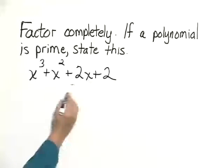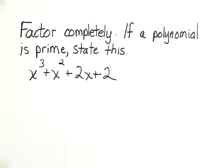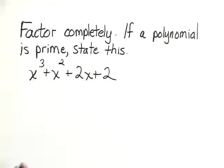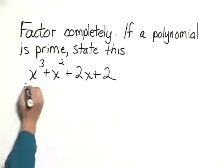We first check to see if there are any common factors, and there are not. Then we notice that there are four terms in this polynomial. When we have four terms, we try factoring by grouping.